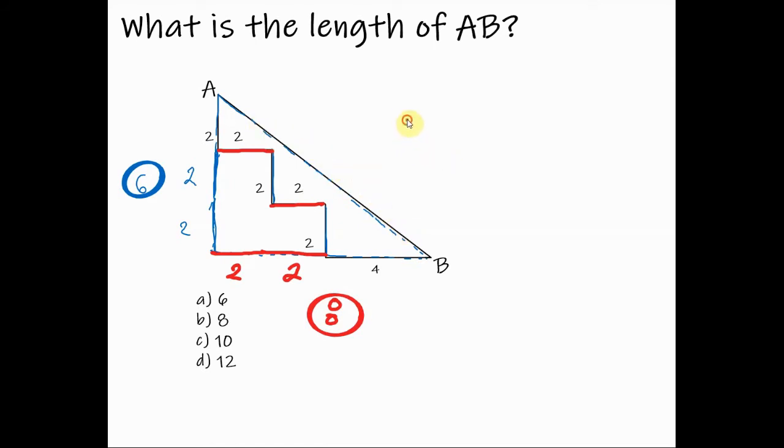So we can use c squared is equal to a squared plus b squared. So we have c squared is equal to, for a we have 6, 6 squared plus 8 squared.